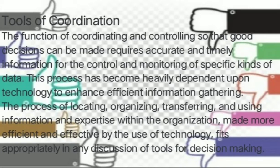Tools of Coordination. The function of coordinating and controlling so that good decisions can be made requires accurate and timely information for the control and monitoring of specific kinds of data. This process has become heavily dependent upon technology to enhance efficient information gathering. The process of locating, organizing, transferring, and using information expertise within the organization, made more efficient and effective by use of technology, fits appropriately in any discussion of tools for decision-making.